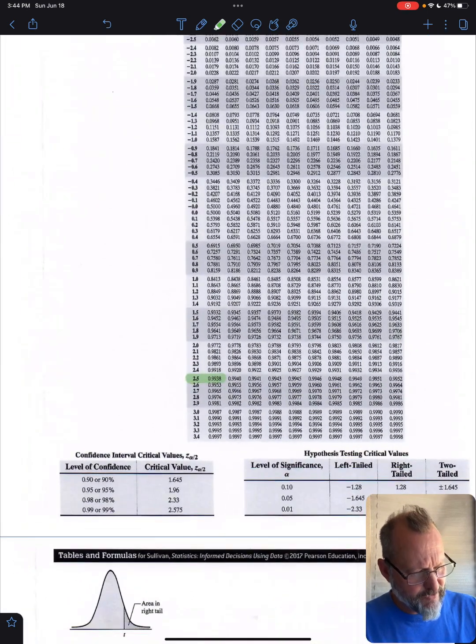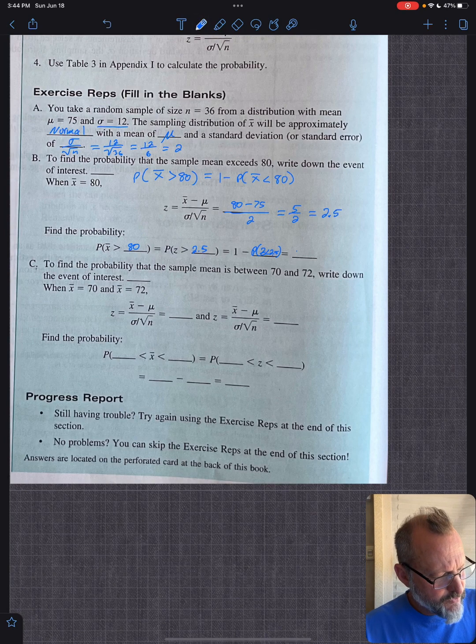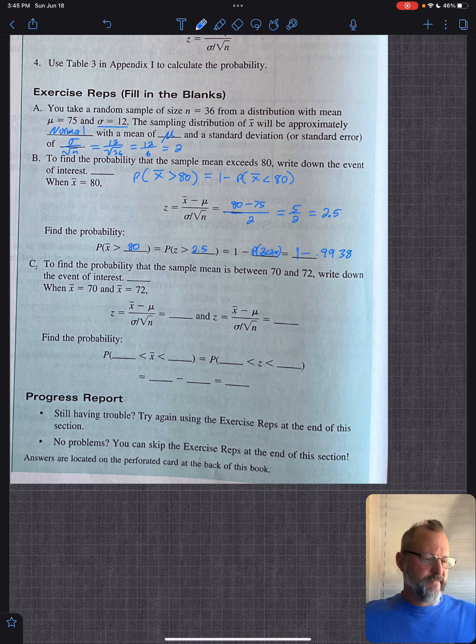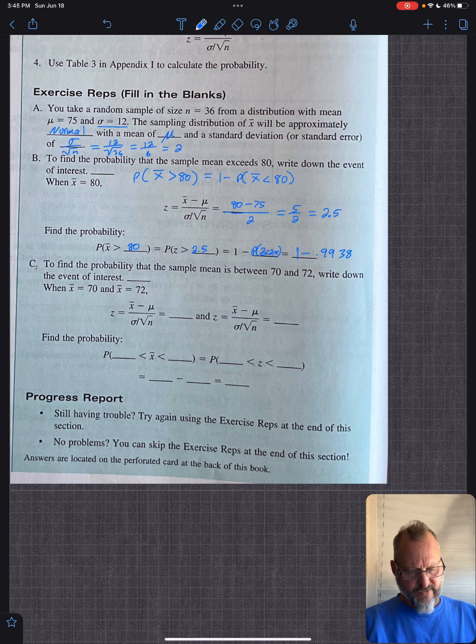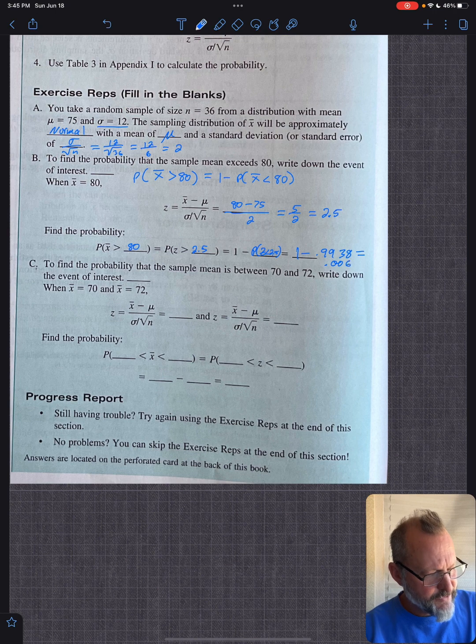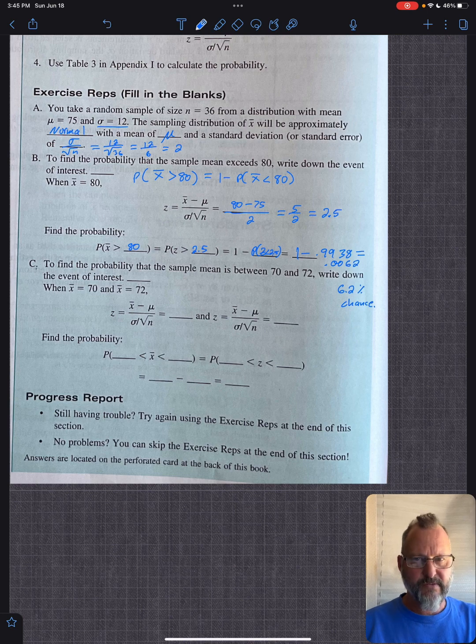So 0.9938 is what we're going to write down back here. So this is 1 minus 0.9938. And we do that calculation. So it'll be 0.00 something. So 1, and then you're going to subtract 0.9938. So that probability is 0.0062, or 6.2% chance.